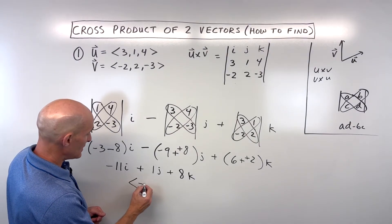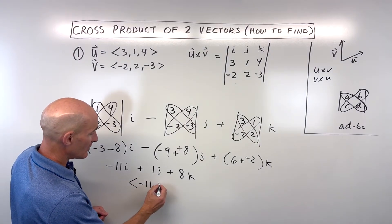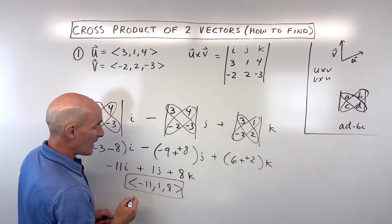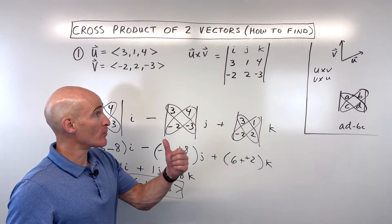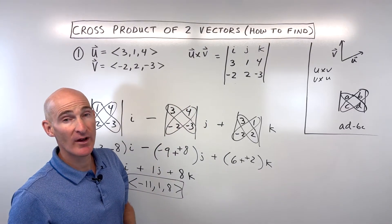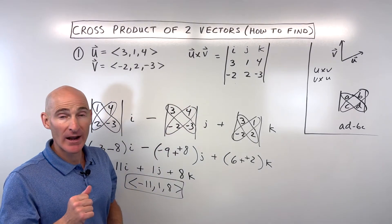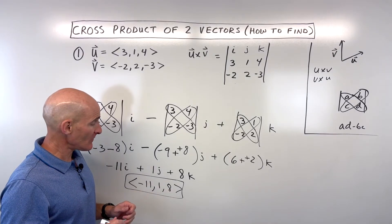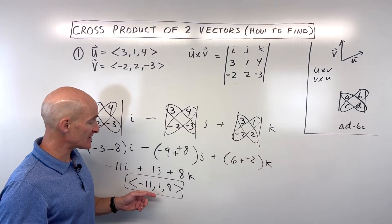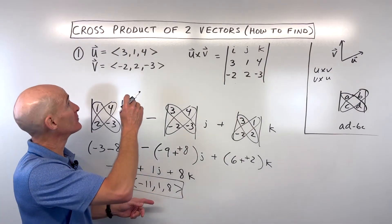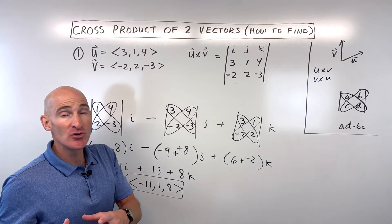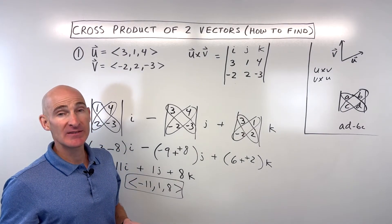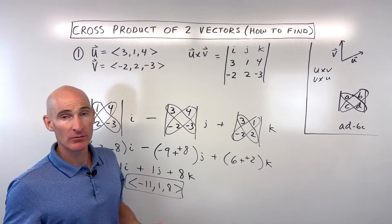You can also write this in component form: (-11, 1, 8), and that's the vector that's going to be perpendicular to both of these two vectors using the right-hand rule. Now if you want to check, you can do the dot product — if the dot product is equal to zero, that means the two vectors are orthogonal or perpendicular.